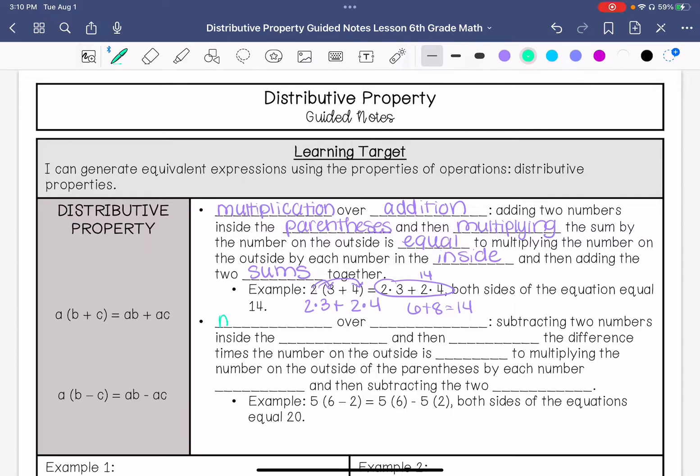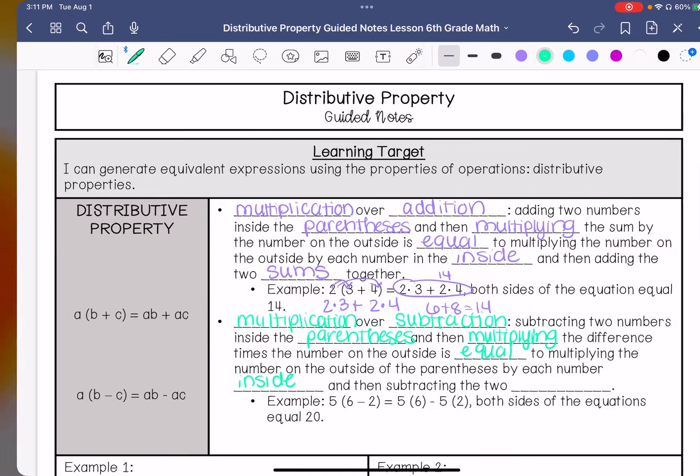Then we have multiplication over subtraction. When you're subtracting two numbers inside the parenthesis and then multiplying the difference times the number on the outside, it is equal to multiplying the number on the outside of the parenthesis by each number in the inside, and then subtracting the two products.